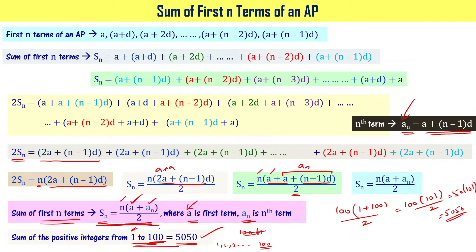To summarize: the sum of first n terms of an arithmetic progression, Sn, equals n times (a plus an) divided by 2, where a is the first term and an is the nth term.